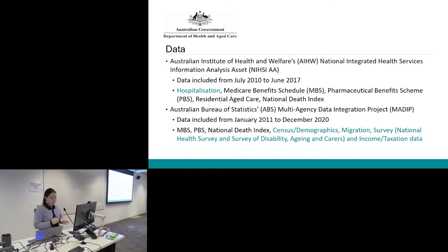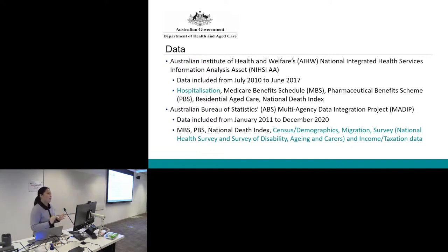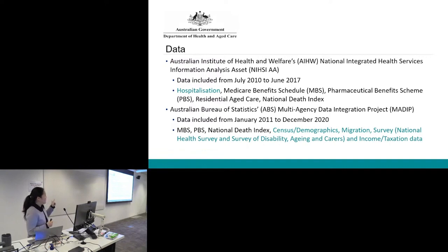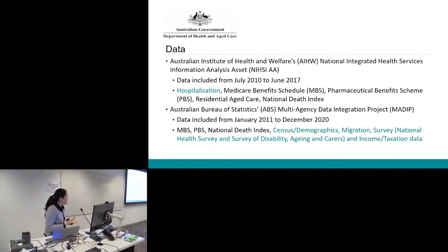The other dataset is ABS's Multi-Agency Data Integration Project — MADIIP. We have similar data there: MBS, PBS, and the National Death Index, but we also have census and demographics data, migration, survey data including the National Health Survey and Survey of Disability, Ageing and Carers, and income and taxation data. We're focusing on using NISAA first because the advantage is we can use the hospitalisation data. As we move towards risk factor analysis, MADIIP is very good at supplementing that information through demographics, migration, survey data, and income and taxation.